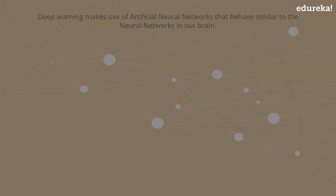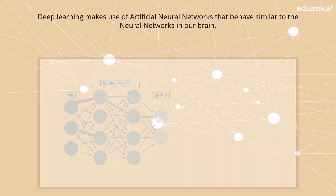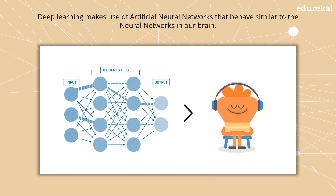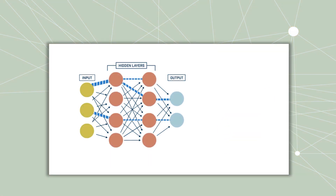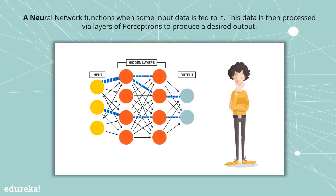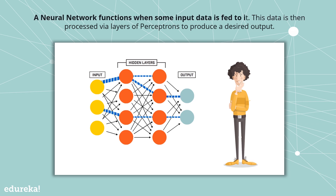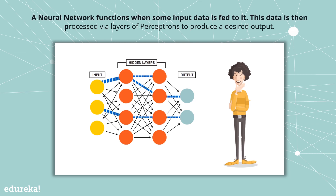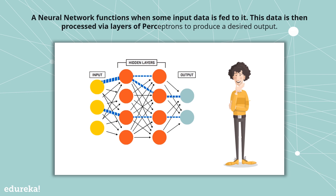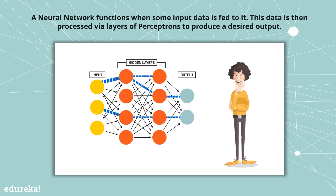Deep learning makes use of artificial neural networks that behave similar to the neural networks in our brain. A neural network functions when some input data is fed to it, and this data is then processed via layers of perceptrons to produce a desired output.